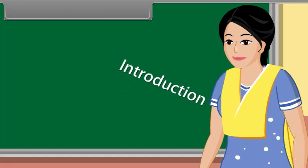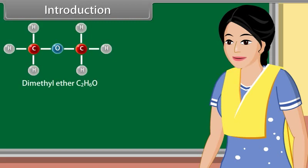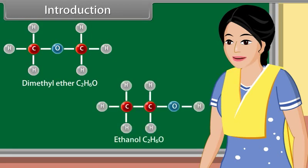Today we learn isomers and concepts used in organic reaction mechanism. The organic compounds which have same molecular formula but different configurations are called isomers. The examples of isomers are dimethyl ether and ethanol. They have same molecular formula but different configuration.